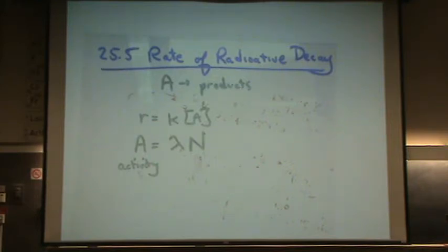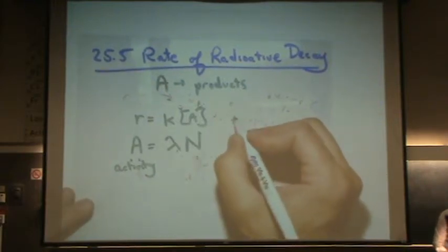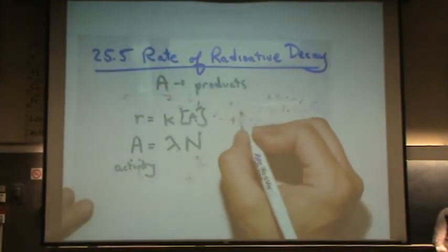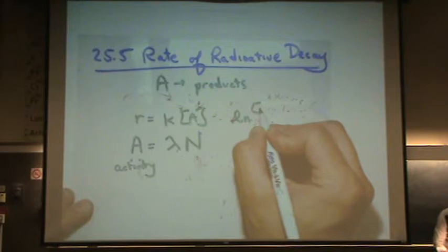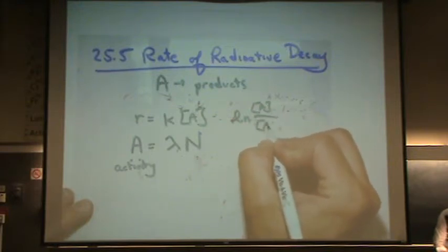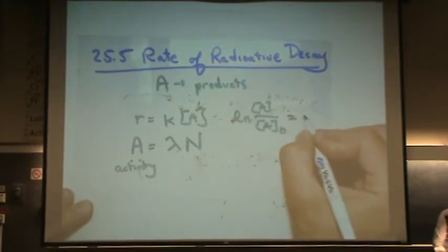If you vaguely remember the kinetics section, I told you that when you use the integrated rate law, and I'll write it here for the first-order reaction, that would be natural log of A over A naught equals negative KT.